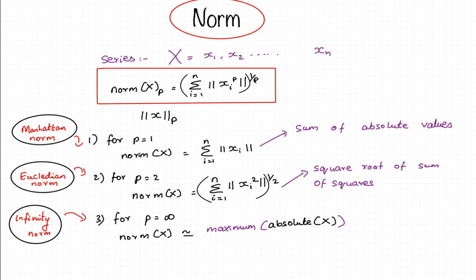Now p can take different values. p here is an integer and three common values of p are 1, 2 and infinity. So for p equal to 1, the norm of x, also known as the L1 norm, is the sum of the absolute values of these elements in this series. It is also commonly known as Manhattan norm or Manhattan taxi cab norm.